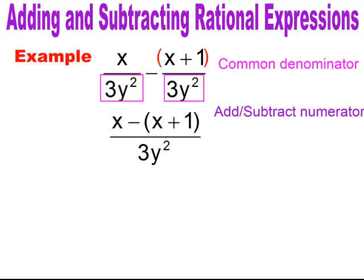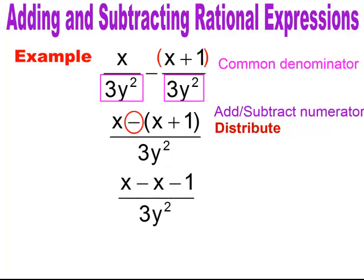When I subtract here I get x minus (x plus 1) over my common denominator of 3y squared. So I need to do the distributive property with that minus sign and I'm going to get x minus x minus 1. It's really important you distribute all the way through to everything in that numerator. Then you combine like terms — the x's cancel out and we're left with negative 1 over 3y squared.